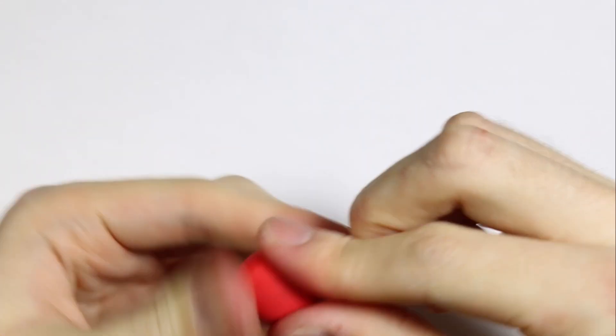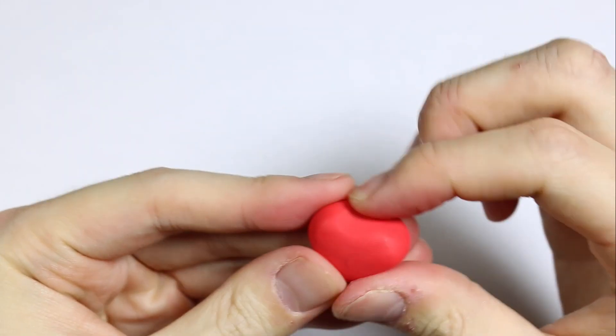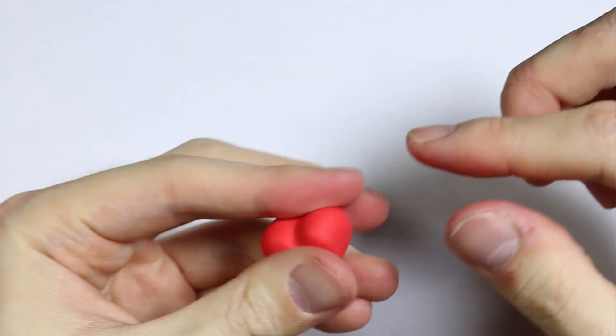So first we're going to start out with the head which is a red heart. I'm taking some clay and I'm going to pinch it into a triangle shape and then I'm going to make an indent in the middle and making sure that one side of the heart is slightly longer than the other.